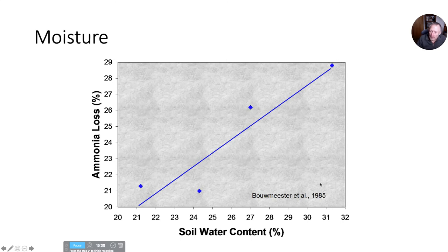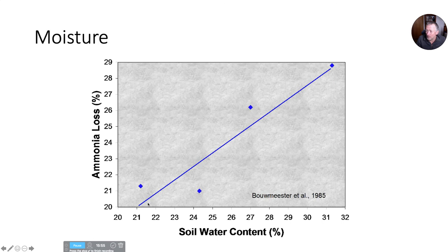Data from this study and many others show that loss of applied N can be up to 30% if soil moisture is over 30% or so. At 20 to 23%, that's about field capacity — you really don't want it much wetter than field capacity at the surface. So if you apply it and it rains a little bit, that's going to be a big problem.